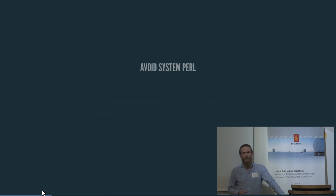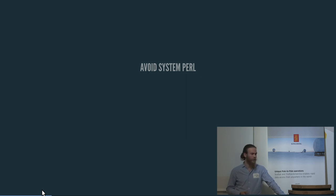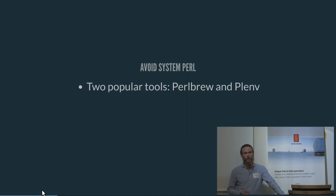One thing that's been important for us too is to, by all means, avoid the system Perl. This has become more and more important as some distros do absurd things with their Perls. Red Hat Linux, at least the Enterprise one, is certainly a good example. There are two popular tools to do this that add a layer of sugar on top of the underlying modules that do all the work.